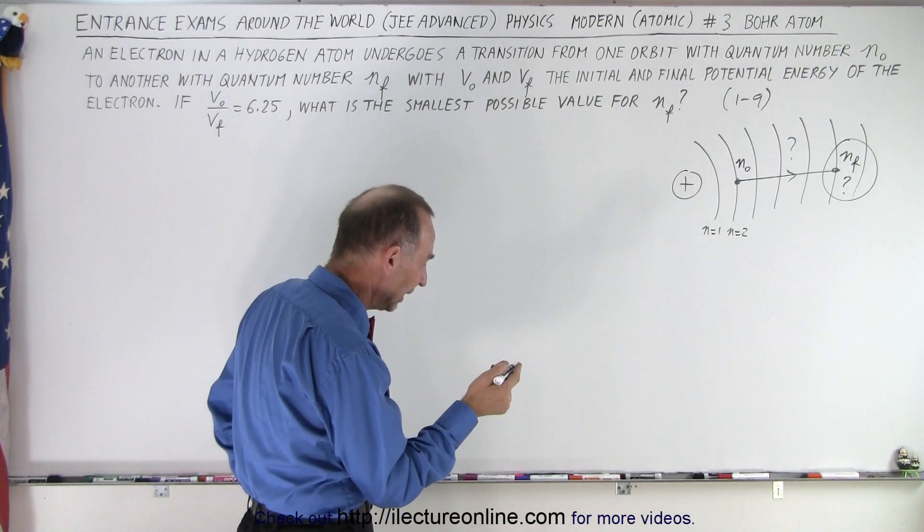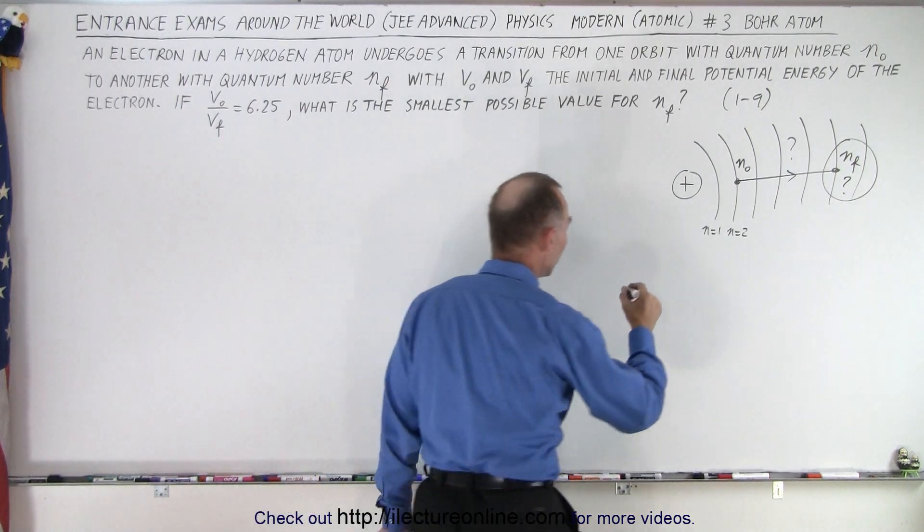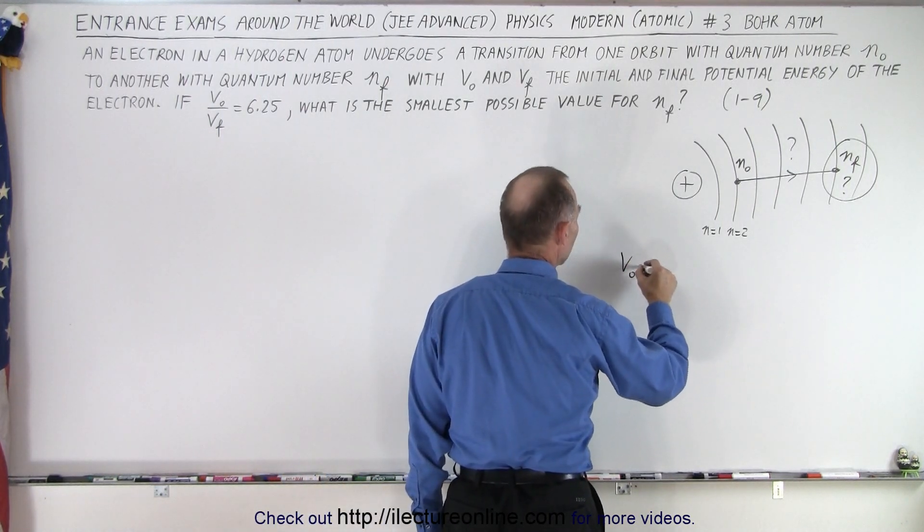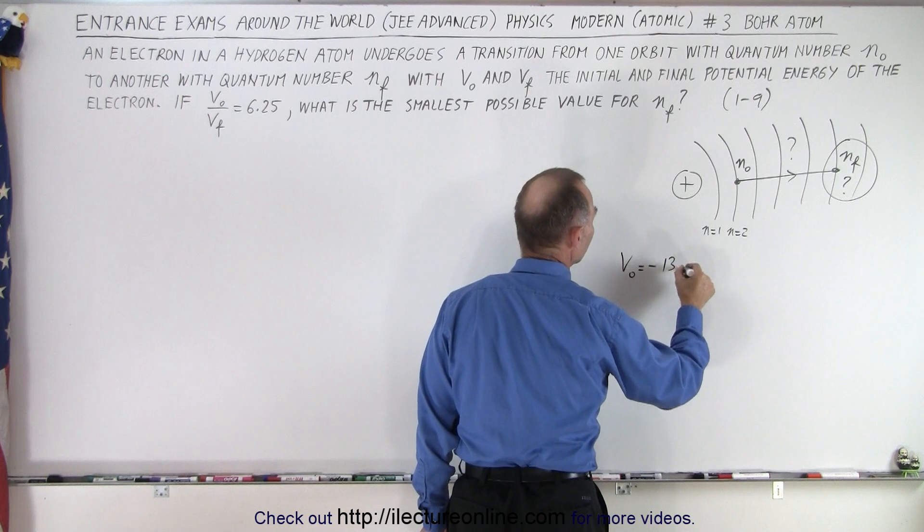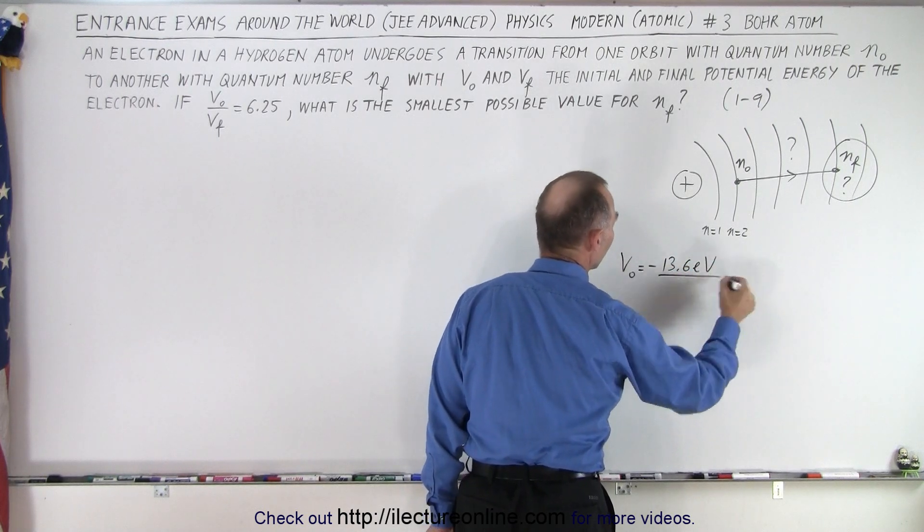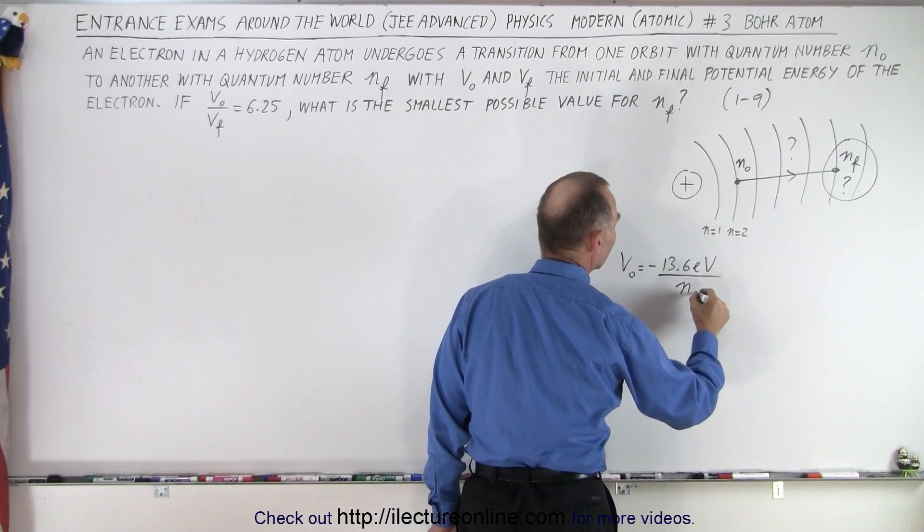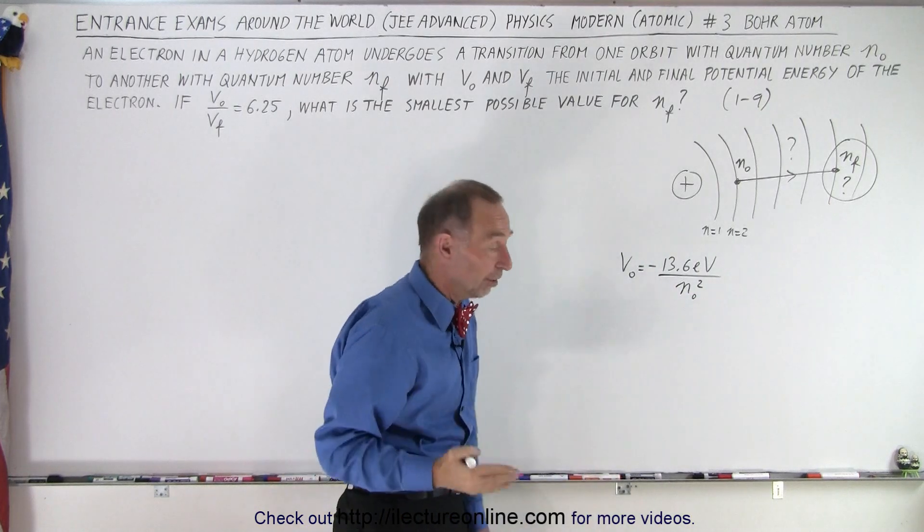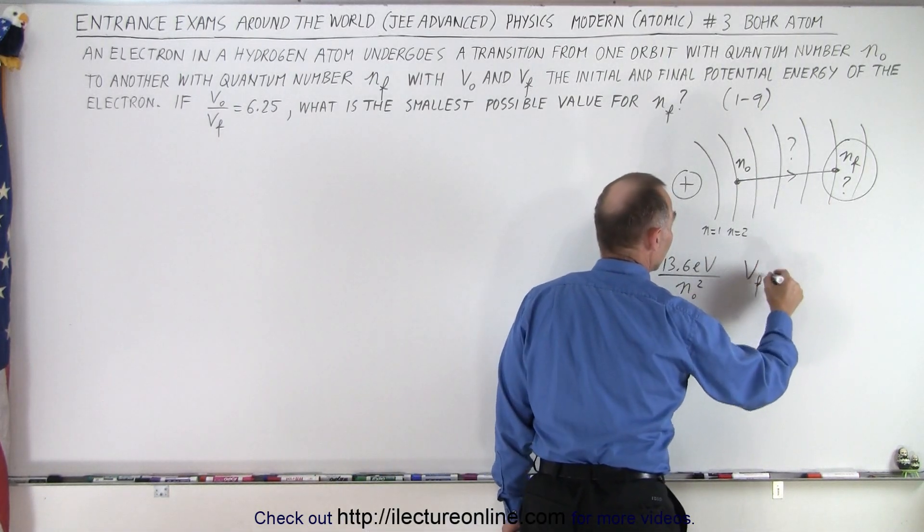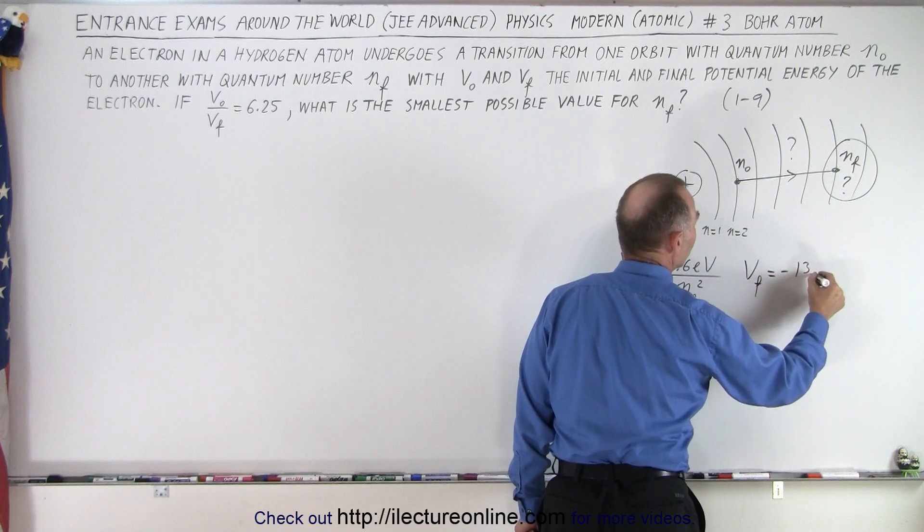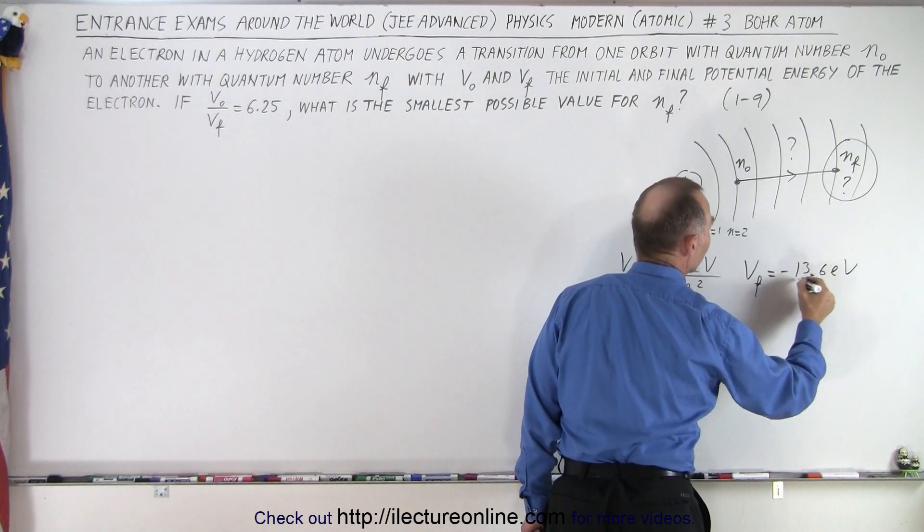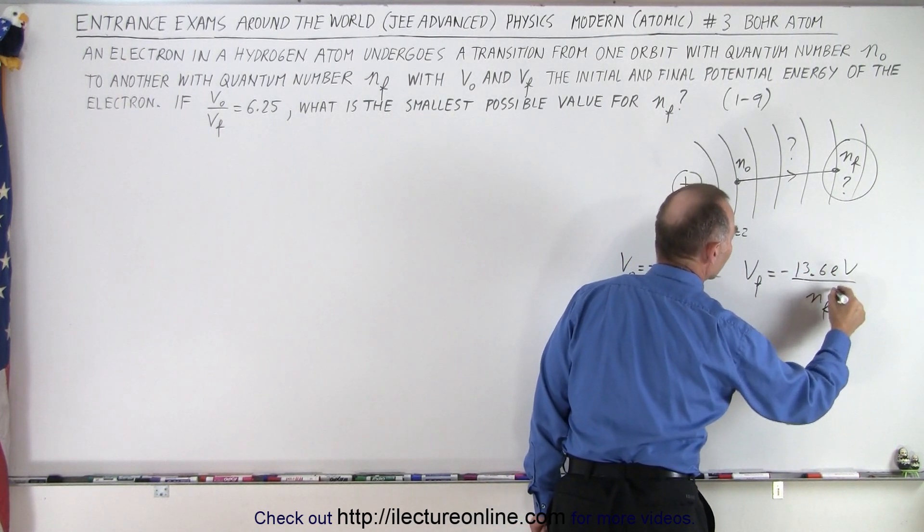All right. So first of all, let's start with this concept. We can say that V_initial is equal to minus 13.6 electron volts divided by n_initial squared, whatever n_initial is, we don't know. And V_final is going to be equal to minus 13.6 electron volts divided by n_final squared.